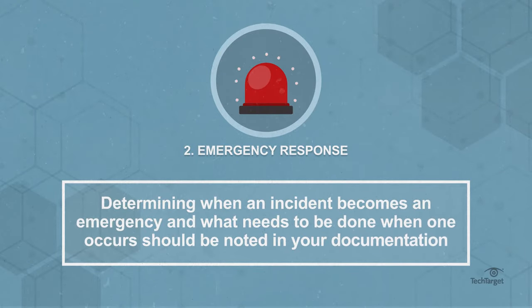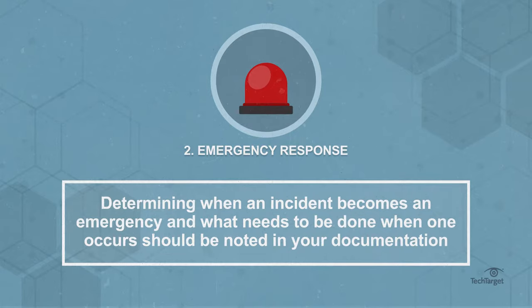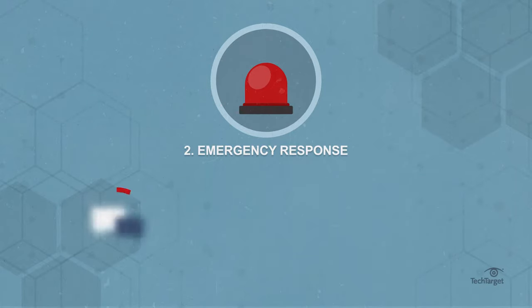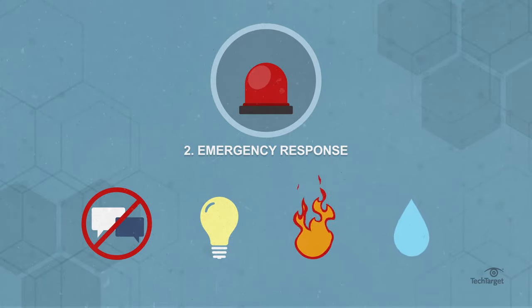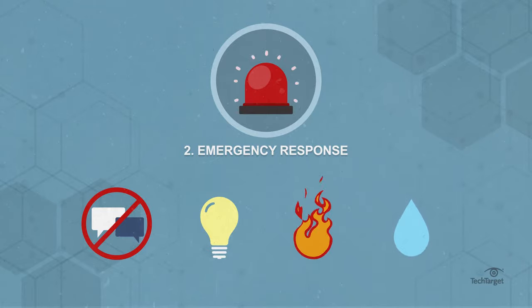Two: emergency response. Determining when an incident becomes an emergency and what needs to be done when one occurs should be noted in your documentation. Incidents such as losing communications, power outages, fires and flooding are causes for concern. Have a plan for initial response to ensure staff and data are safe.